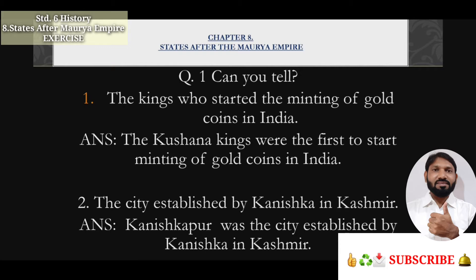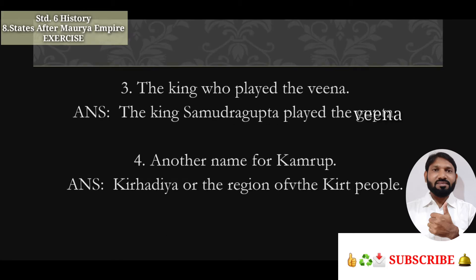Third, the king who played the Veena — the answer is King Samudragupta played the Veena. Four, another name of Kamrupa — the answer is Kiradiya, or the region of the Kirt people.